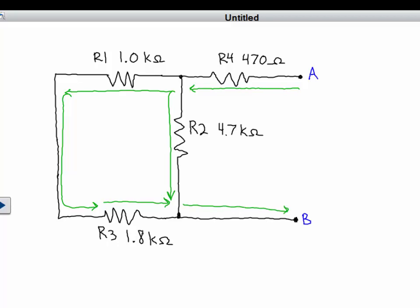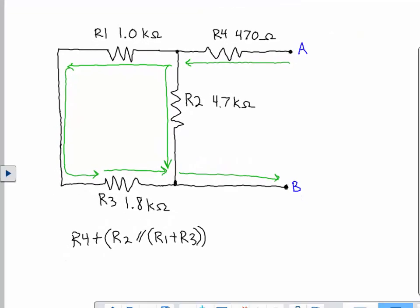From that point of view, resistor 4 is in series with R2 in parallel with R1 plus R3. By solving that calculation, we come up with an equivalent resistance or Thevenin resistance of 2.225 kiloohms. So that is our Thevenin resistance.